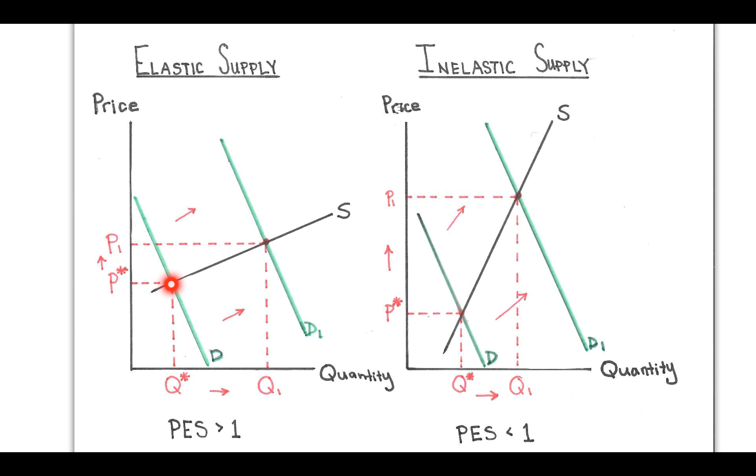That increase in demand can be met with a relatively small change in price. When I say relatively, that's in comparison to the change in quantity. So you can see this distance from Q star to Q1 is bigger than the change from P star to P1.